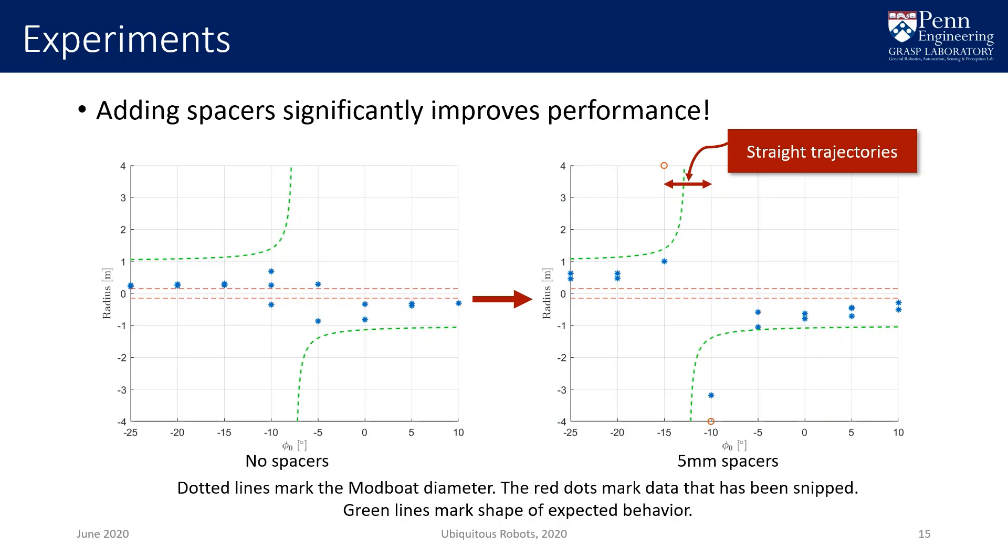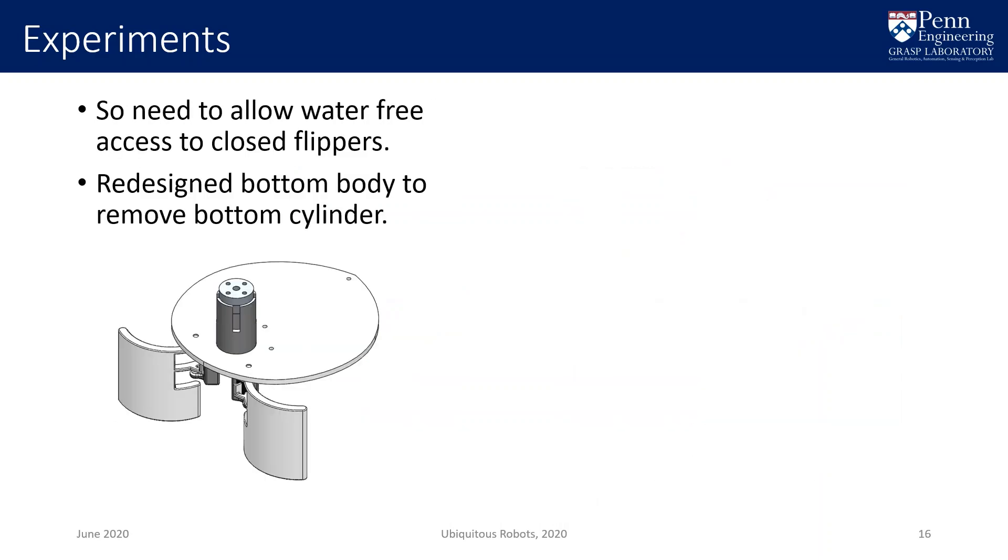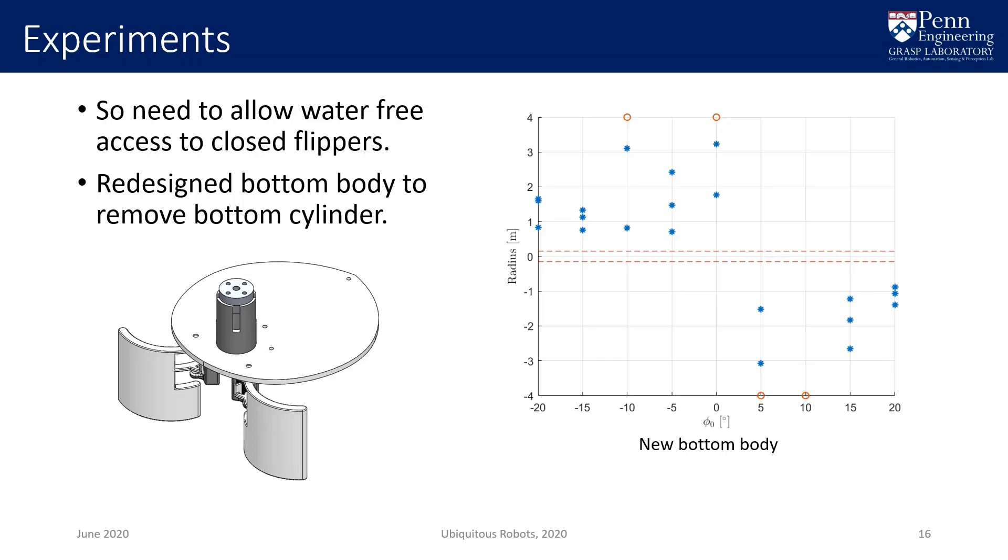Given this new knowledge, we improved the mechanical design by removing the bottom body cylinder. The fully closed position is now defined by hard stops, and the flippers no longer sit flush against the surface. This means water is present to immediately begin opening the flippers, reducing the center of mass sensitivity. Repeating our experiments with this new body shows further improvement. The range of offsets that produce straight line trajectories is much wider and trajectories across the whole range are straighter, which gives us reasonable open loop performance that can be improved with closed loop control.